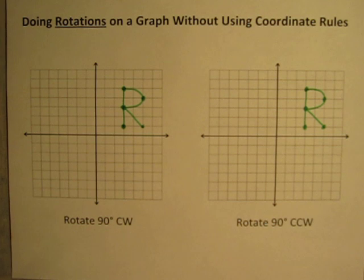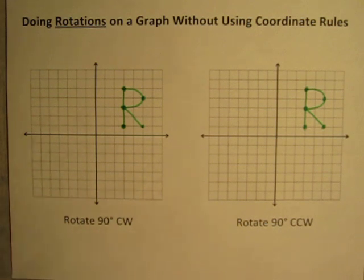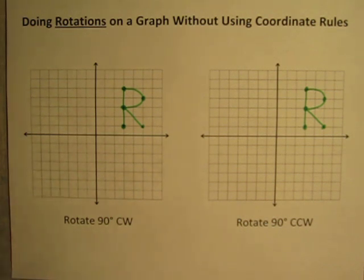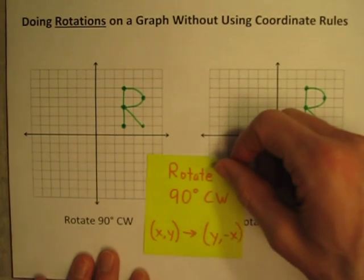I'd like to show you this without using coordinate rules. I have other videos where I show you how to use coordinate rules, and coordinate rules can be handy, but sometimes you don't need them. Sometimes you can just visualize what this rotation is going to do to the shape and where the shape will be when the rotation is done — you don't need to bother with all the coordinates.